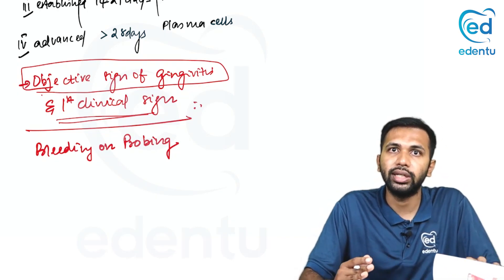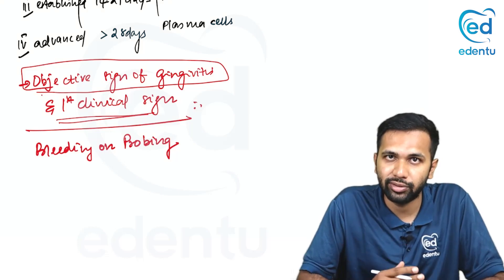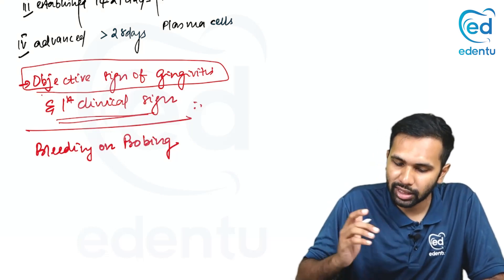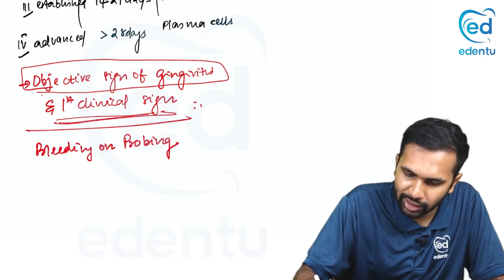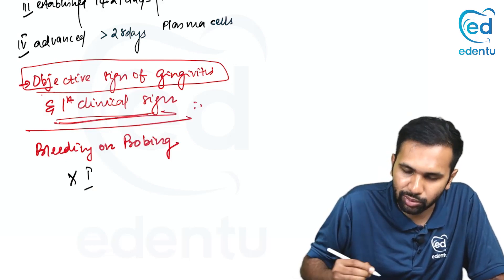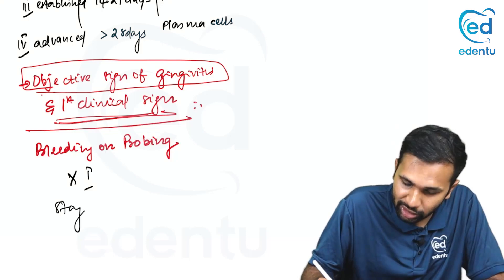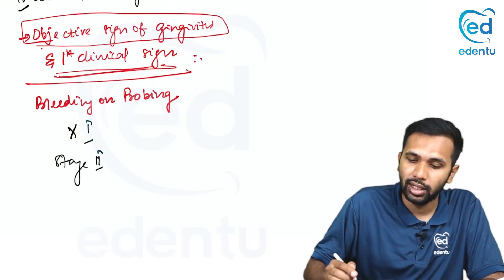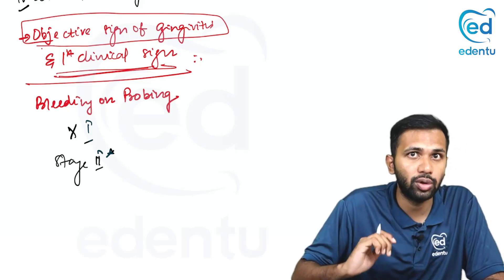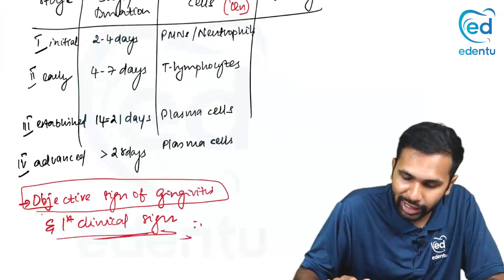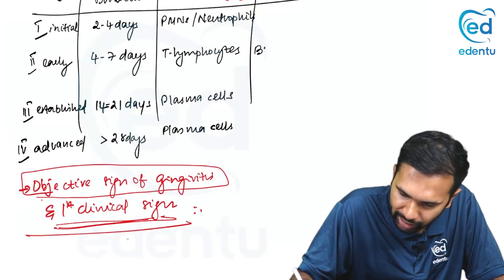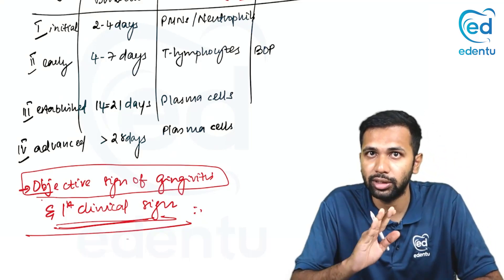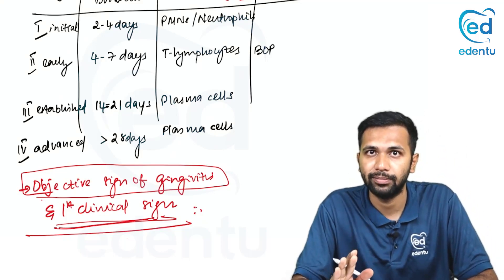Bleeding on probing is the objective sign of gingivitis and the earliest clinical sign. But most importantly, even though it is the first clinical sign, it is not seen in stage 1 — it is seen in stage 2 of gingivitis. Since the first clinical signs are present in stage 2, stage 1 is referred to as subclinical gingivitis.